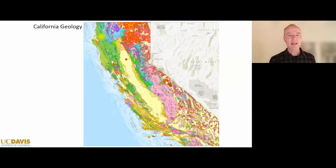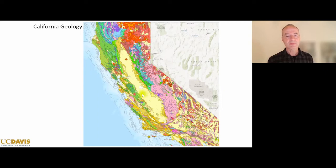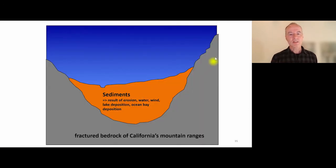California has a highly variable geology. Most of the landscape other than the beige-colored areas on the map are mountains — the Sierra Nevada, the Cascade Range to the north, the coastal range along the coast, and the basin and range province in the southeastern deserts. The beige or light yellow color designates our valleys — our large basins. These basins are essentially gigantic bathtubs, where the bathtub walls are the rocks of the surrounding mountains.